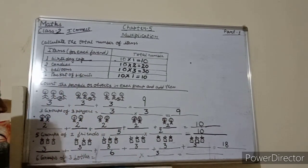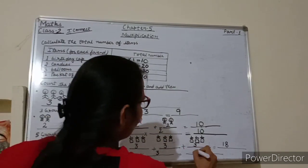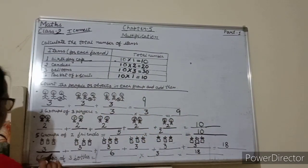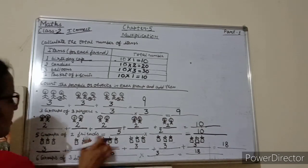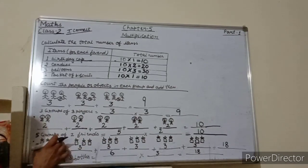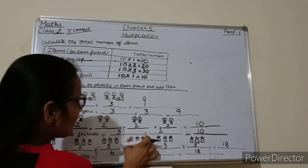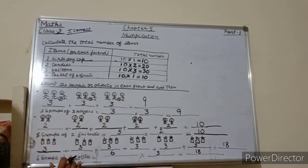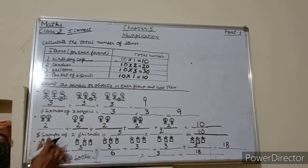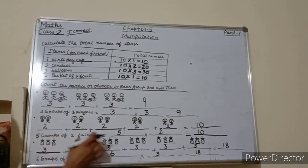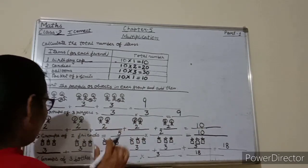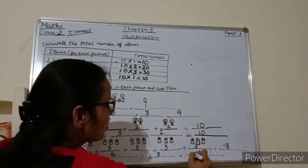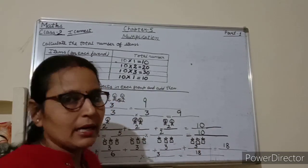6 threes are — very good — 18. So how many times 3? 6 times: 1 time, 2 times, 3 times, 4 times, 5 times, 6 times. So 6 times 3 is equals to 18.